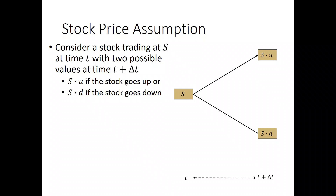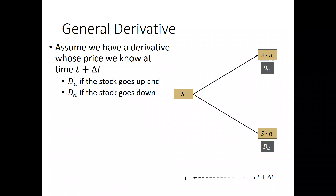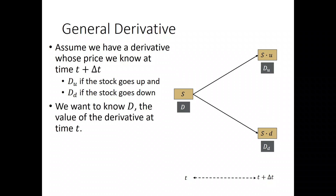We're going to price a generic derivative — it doesn't really matter what it is, but the value of the derivative simply depends on this stock price. We'll assume we have a derivative whose price we know at time t plus delta t. If the stock is trading at s times u, we call that d sub u. And if the stock is trading at s times d, we call that d sub d. What we want to find out is d, the value of the derivative at time t.